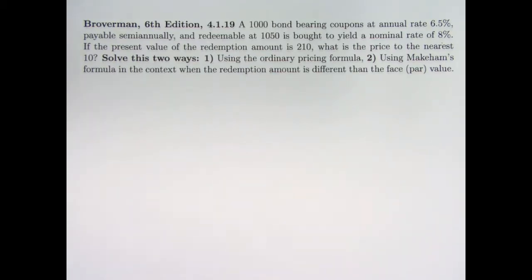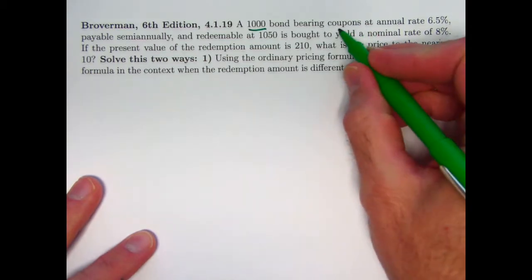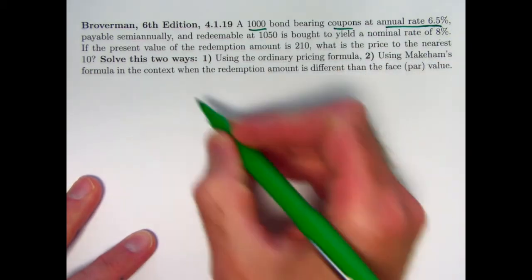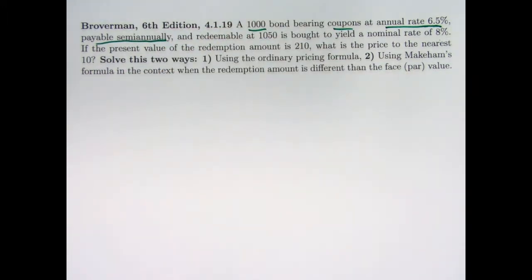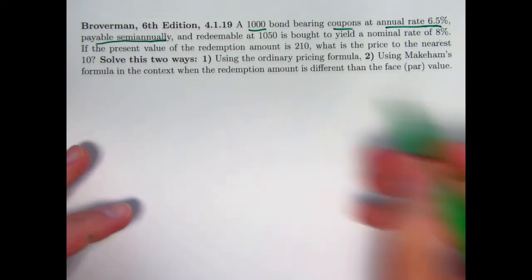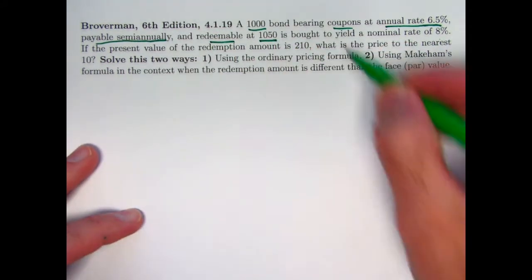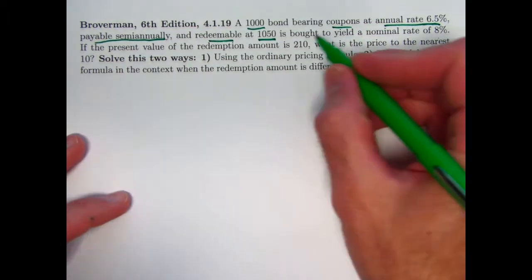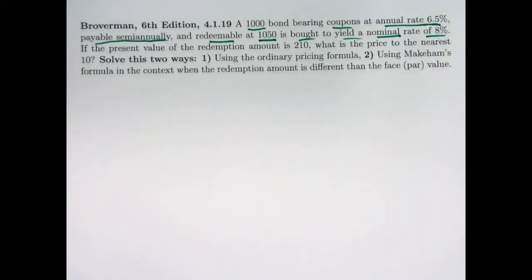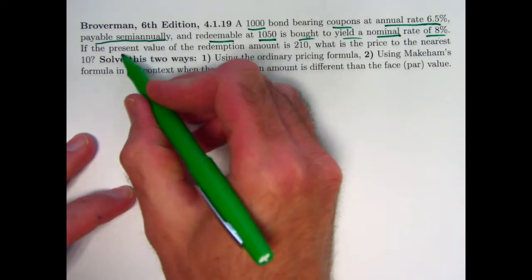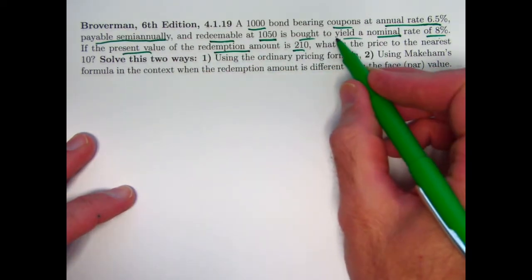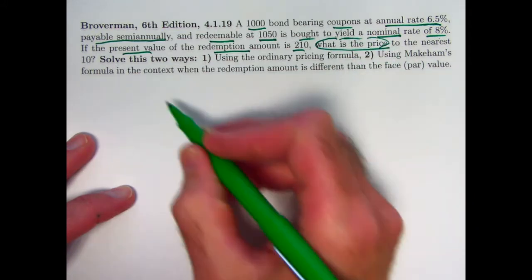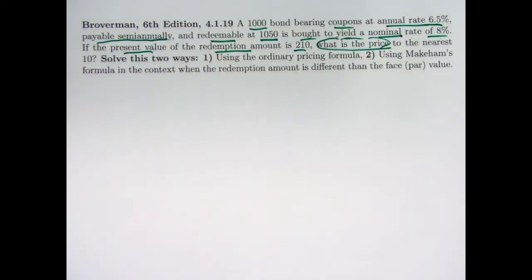Here's the problem statement. A bond of face value 1,000 bears coupons that have an annual rate of 6.5%, payable semi-annually, so the semi-annual rate would be 3.25%. It's redeemable at an amount 1,050 that's different than the face or par value. It's bought to yield a nominal rate of 8%, so the semi-annual rate would be 4%. If the present value of the redemption amount is 210, the goal is to find the price of the bond to the nearest 10.